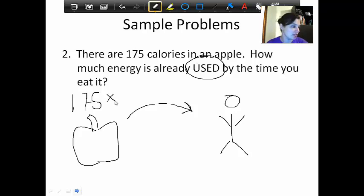175 times 0.10 equals 17.5 calories. So you get 17.5 calories from that apple. How much has been used? In other words, how much did you not get? Then we have to do a little subtraction.